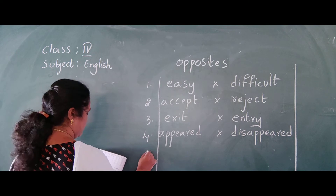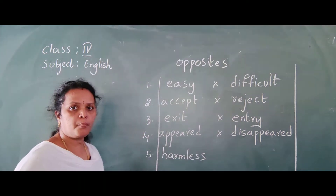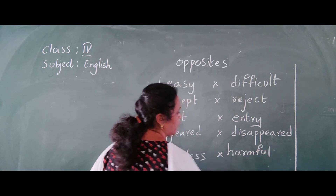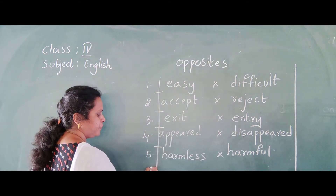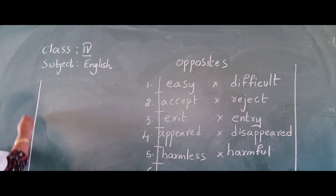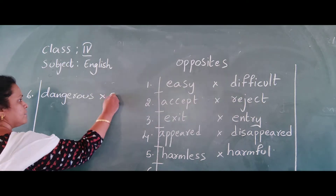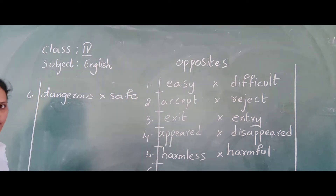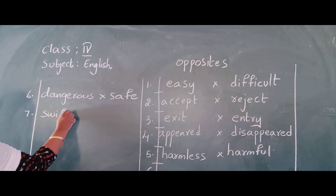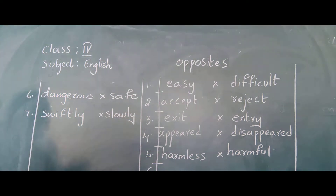Fifth one: Harmless — opposite is Harmful. H-A-R-M-F-U-L. Sixth one: Dangerous — opposite is Safe. Seventh one: Swiftly — opposite is Slowly. Okay.